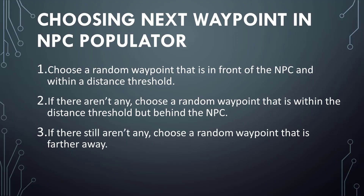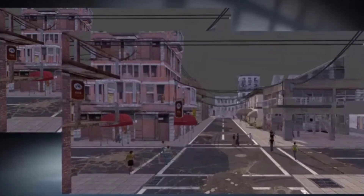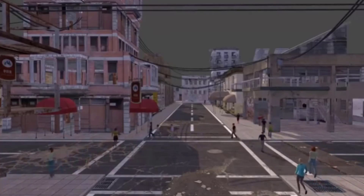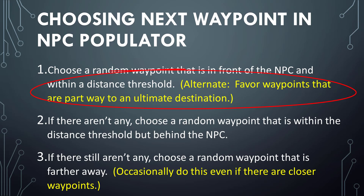Here's the approach I took to selecting the next waypoint in the NPC Populator. First, choose a random waypoint that is in front of the NPC and within some distance threshold. If there aren't any that fit the first criteria, choose a random waypoint that is behind the NPC but still within that distance threshold. And if there still aren't any waypoints, choose a random waypoint that is further away. With this simple approach, the wandering at least appears random and there aren't many abrupt changes in direction. This is just a heuristic and could certainly be changed — for example, it might be good to occasionally choose a more distant waypoint, or if there is an ultimate destination as part of a larger goal, waypoints could be chosen to get successively closer to that destination.